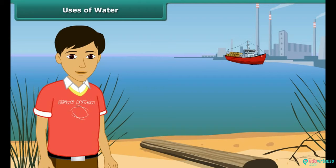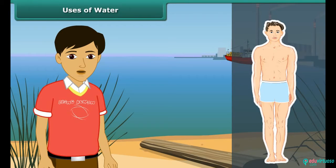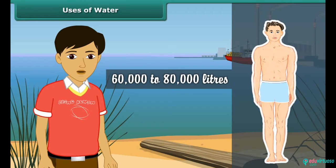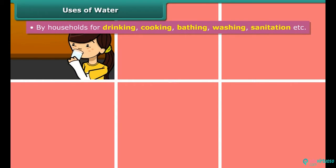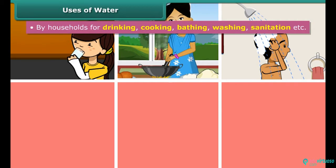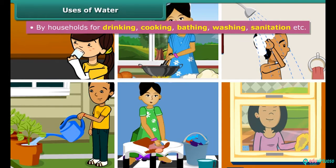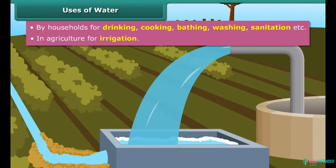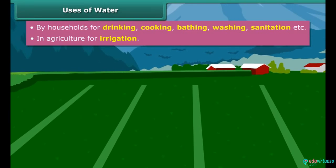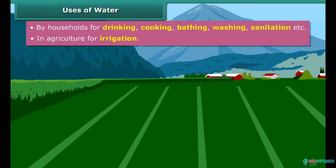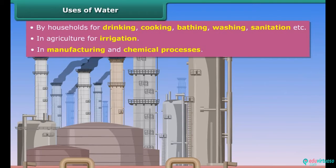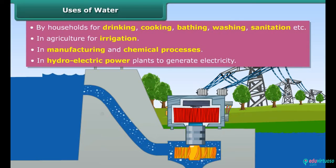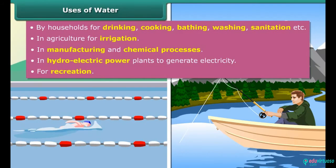We use water for various different purposes. On average, a human being consumes about 60,000 to 80,000 liters of water in his lifetime. Water is used in households for drinking, cooking, bathing, gardening, washing and cleaning purposes. Irrigation facilities improve agricultural output and help meet the growing demand for food from a growing world population — irrigation acts as an insurance against the vagaries of nature. Water is also used in industries for cooling purposes and as a solvent, and to generate electricity. Recreational activities such as swimming, fishing, sailing and other water sports also require water.